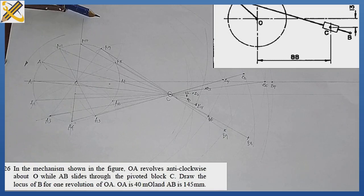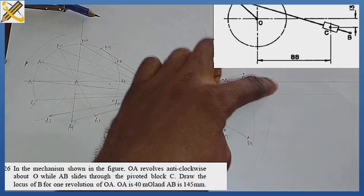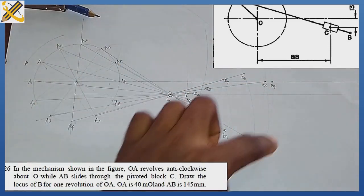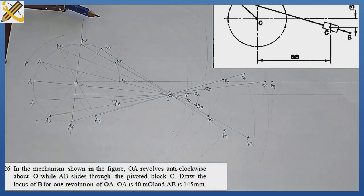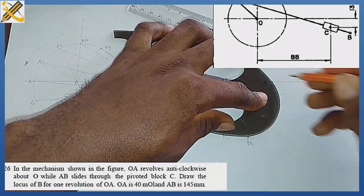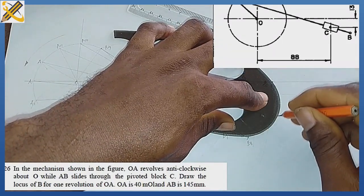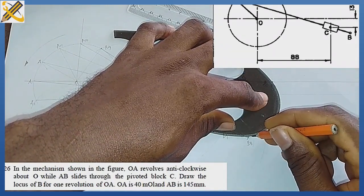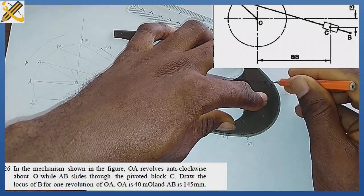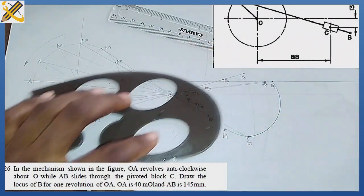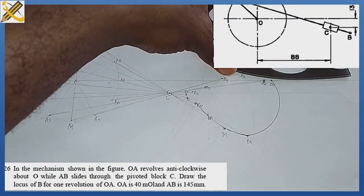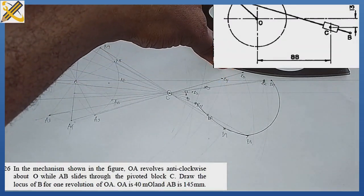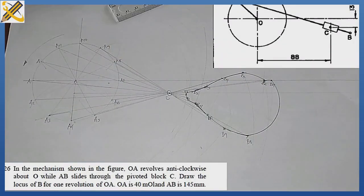Pick your French curve and draw out the shape of the locus curve through all the plotted points. From point B7 to B8 and connecting all the points, you get the locus of point B — that is the complete trace of point B as crank OA makes a full revolution.